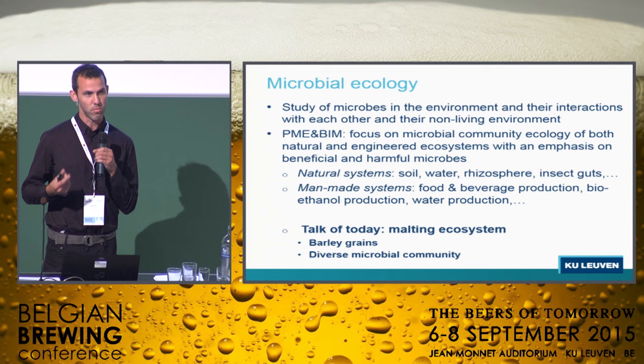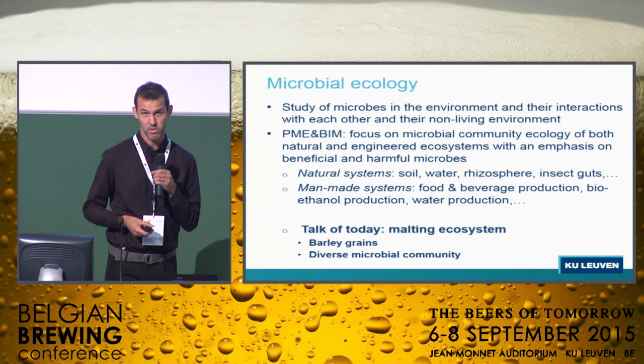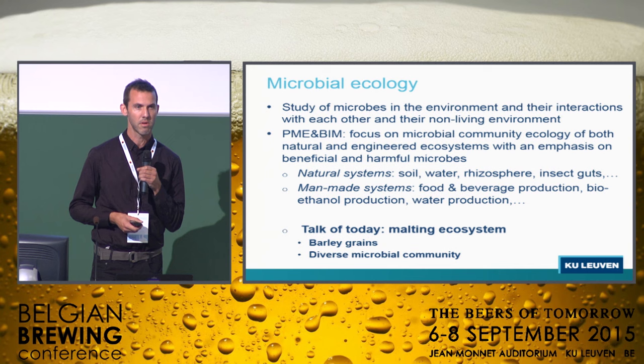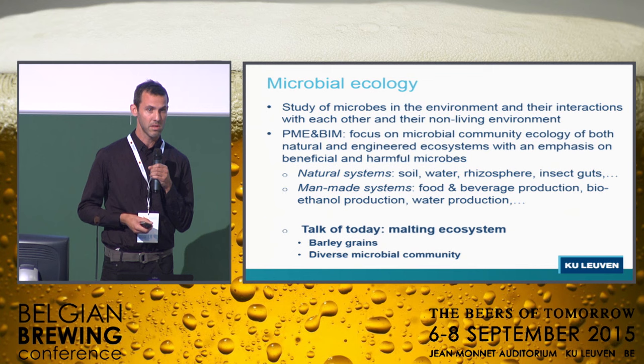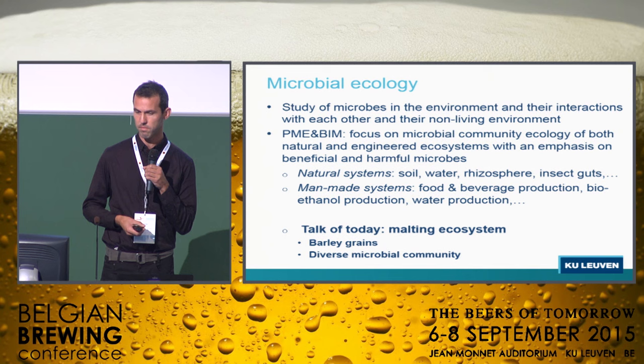We focus on both beneficial and harmful microbes. Systems that we have studied so far include natural systems like soils, water, rhizosphere, insect guts, but also man-made engineered systems, like food and beverage production including brewing, bioethanol production, and water production.